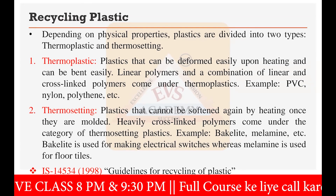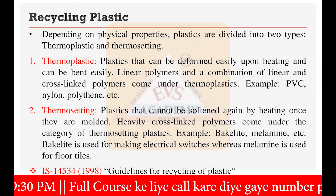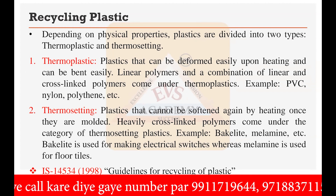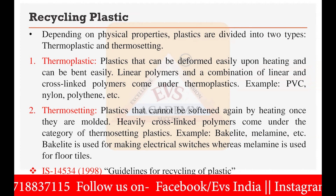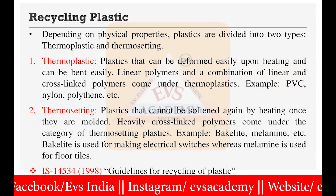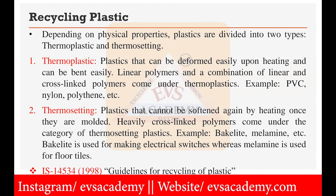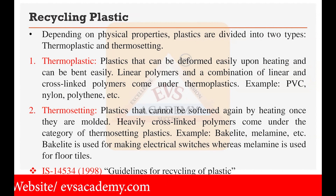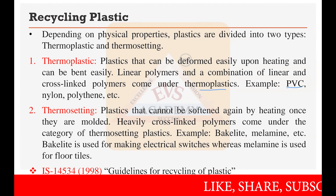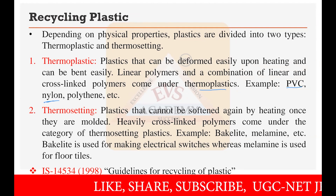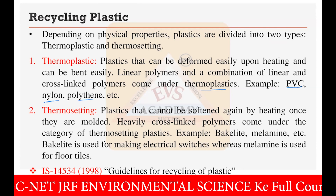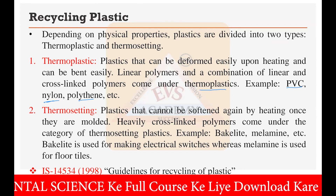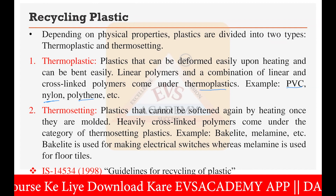According to their physical properties, plastics are divided into two categories: thermoplastic and thermosetting. Thermoplastics can be deformed easily upon heating and can be bent easily. Linear polymers and combinations of linear and cross-linked polymers come under thermoplastics. Examples include nylon and polythene — with a small increase in temperature, their shape can be changed. All types that are sensitive to temperature are termed thermoplastic.